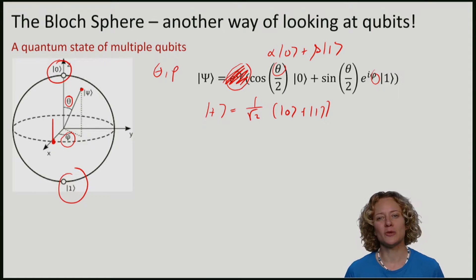Let's now focus on qubits for which the angle phi is 0. Since we ignore the global phase, this means that the qubit is characterized by only one number, namely the angle theta.